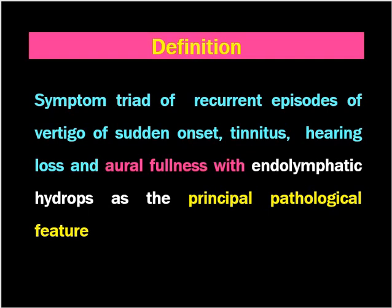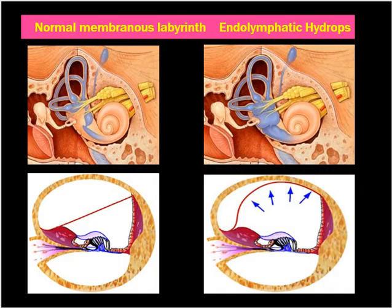The hearing loss in Meniere's disease will be sensorineural hearing loss — the problem lies in the cochlea or the inner ear. The basic problem lies in the saccule. This is the saccule, the normal one, and this is the saccule which is swollen. This is hydrops.